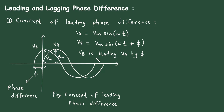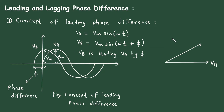This is in alternating quantity. If we draw this in phasors, we have to take Va as the reference because Va is starting from zero. Then Vb is leading. Both Va and Vb have the same amplitude Vm, so the length of the Va and Vb arrows in the phasor diagram will be the same. The angle between them is the phase angle, represented by φ.